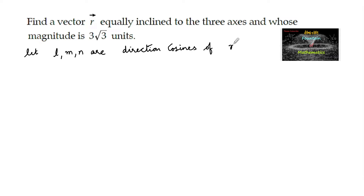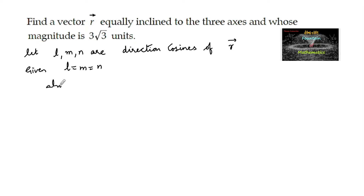The direction cosines of vector r are equally inclined, so we can say l is equal to m is equal to n. We also have the fundamental relation between the direction cosines: l² + m² + n² = 1.